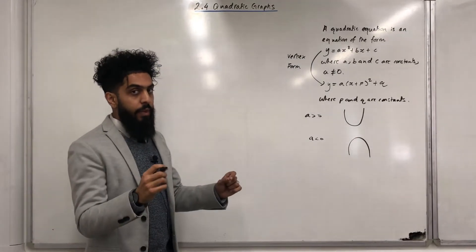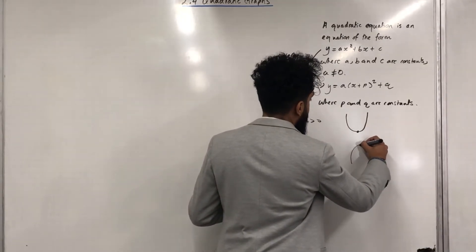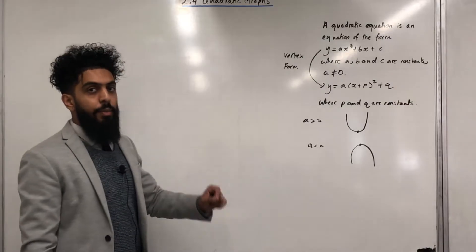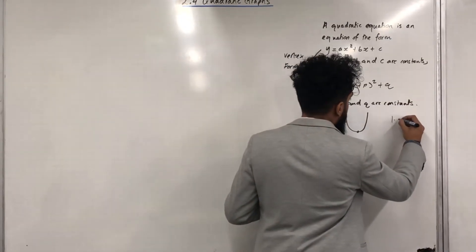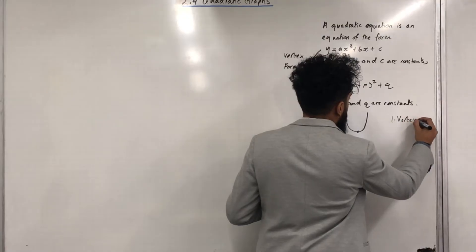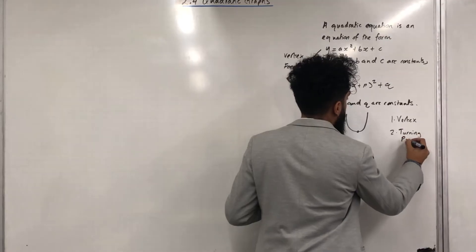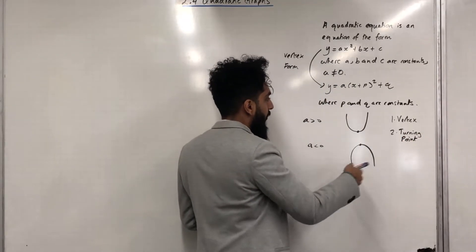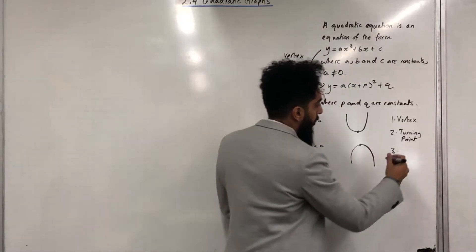Consider the following two points. These two points have three different names. The first one is called the vertex. The second one is called the turning point. As you can see, at these two points the graphs turn, hence the turning point. The third one is called the stationary point.